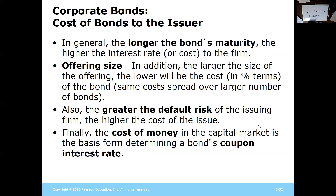The greater the default risk — the greater the risk a company won't pay back — the higher the costs for the bond issue. The cost of money in the capital market, meaning the interest rate, is how we determine a bond's coupon interest rate. They look at the prevailing rate and how their personal situation interacts with that to determine what their coupon interest rate will be, generally trying to match it close to the market rate initially.